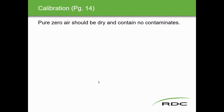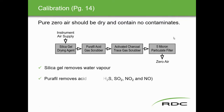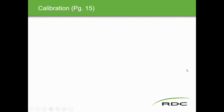For calibration, zero air must be dry and contain no contaminants. The zero air supply passes through: a silica gel drying agent to remove water vapor; a Purafil acid gas scrubber to remove H2S, SO2, NO2, and NO; an activated charcoal scrubber to remove trace gases; and a five-micron particulate filter. This ensures the zero air is pure enough for parts-per-billion level chemiluminescence measurements.